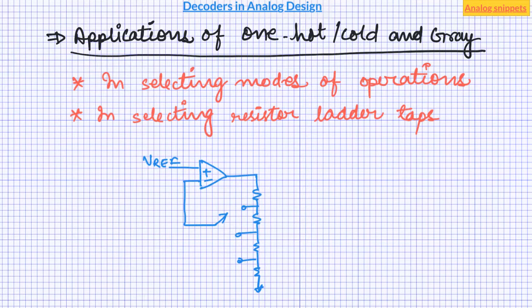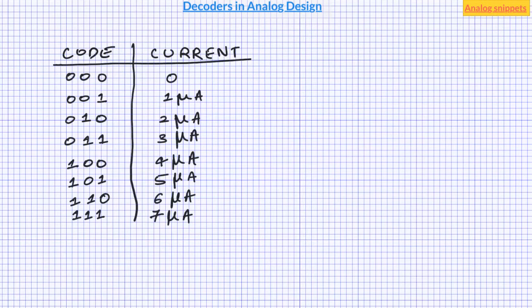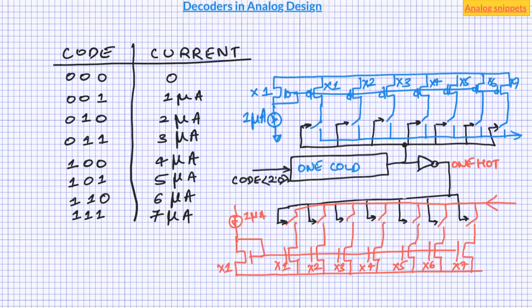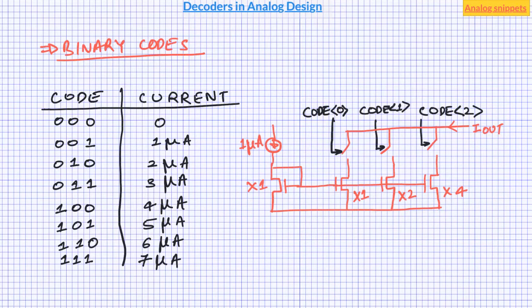But now let's consider a different type of application. Let's say if we want to generate a linearly increasing current depending on the code. Of course we can design 7 current sources and then use 1-hot or 1-cold decoder, depending on whether we are using nMOS current mirror or PMOS current mirrors. But actually there is a much more efficient way of doing it using binary codes. We can achieve same functionality by having just 3 current sources of increasing magnitude and then directly feeding code to the switches.